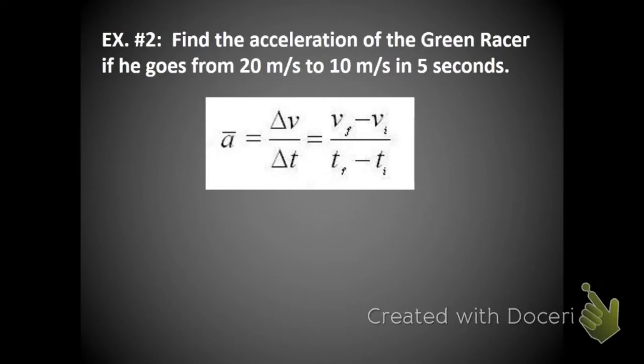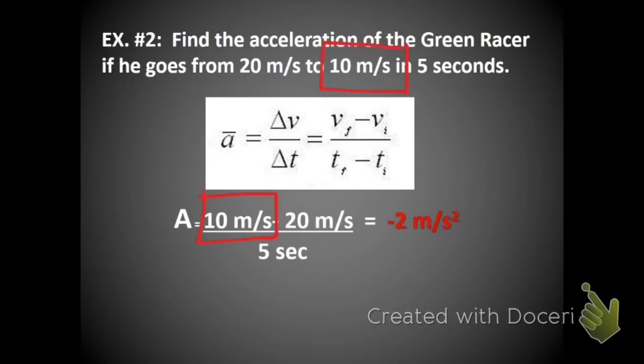I'm going to use the same equation, though, and see what that looks like mathematically. So now, the green racer's final speed is 10, which is the smaller number. So when I subtract his starting speed, 10 minus 20, I actually get a negative number. So when I divide it out, I get a negative acceleration.